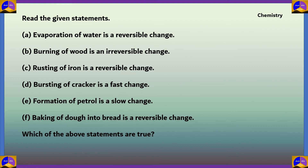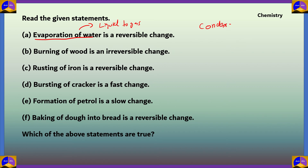Statement A says evaporation of water is a reversible change. Evaporation means the process which changes water from liquid to gas. If it is reversible, there must be a process from gas back to liquid — and there is: gas to liquid is condensation. So evaporation is a reversible change, and statement A is true.